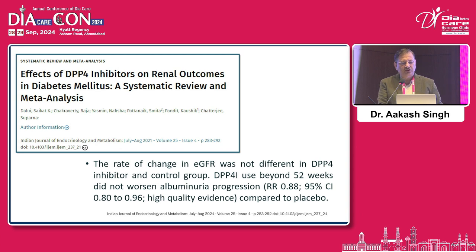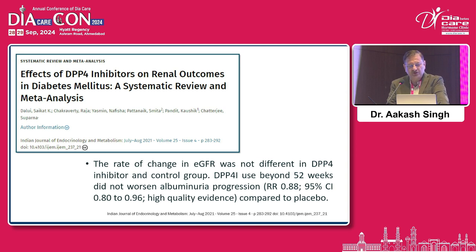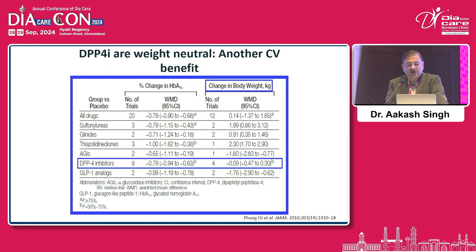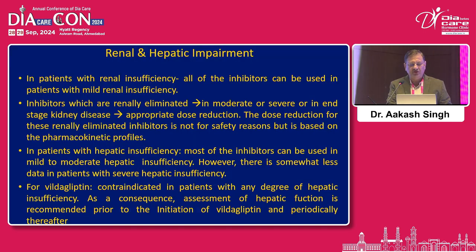Regarding the effect of DPP-4 inhibitors on renal outcomes in diabetes mellitus, renal outcomes are equally important because renal deterioration increases CV events. The rate of change of eGFR was not different in DPP-4 inhibitor and control groups, so the class is renally safe. DPP-4 inhibitors also have a very low risk of hypoglycemia with good glycemic control, and since excessive hypoglycemia increases CV events, this is beneficial. DPP-4 inhibitors are weight-neutral, which is another CV benefit.